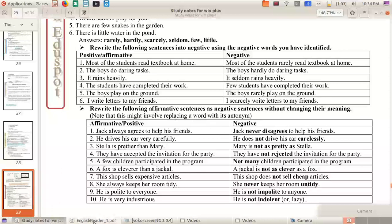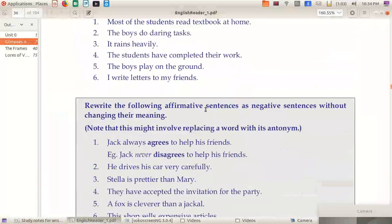And you have an assignment here. Rewrite the following affirmative sentences as negative sentences without changing their meaning. Note that this might involve replacing a word with its antonym. So you can use the antonym of the word and you will get the opposite sentence. But with this antonym you have to use the negative indicating word like never.